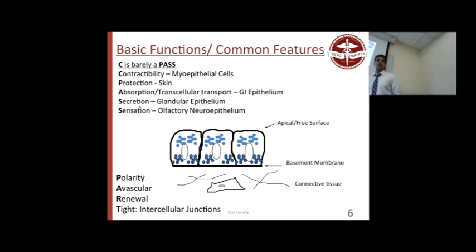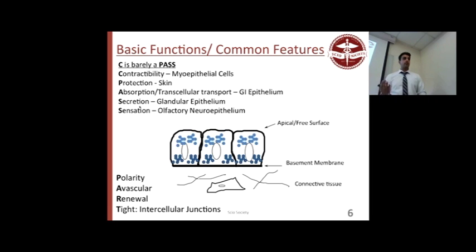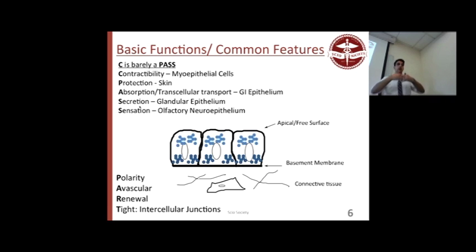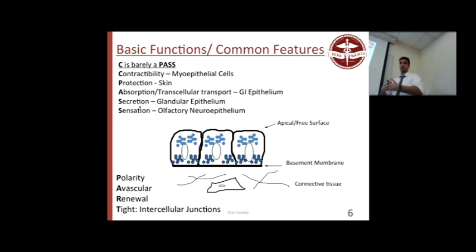What do epithelial cells have in common? They have polarity — the apical surface is different from the basal surface. They're avascular, so they don't have blood vessels and must work through diffusion. Their renewal rate is really high — that's why the tongue uses epithelial tissue instead of neuronal tissue, because it regenerates quickly. And they have tight intracellular junctions, connected tightly to protect you from the environment — everything must go through a cell, not between cells.